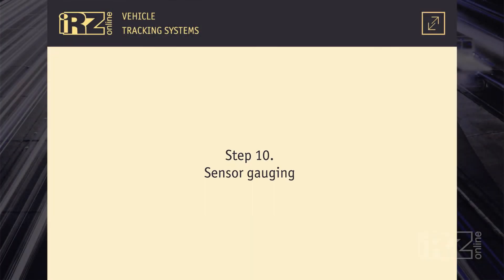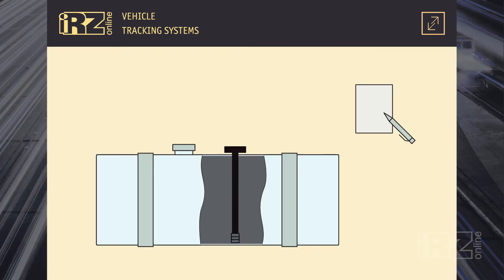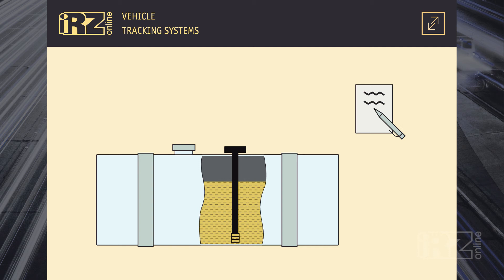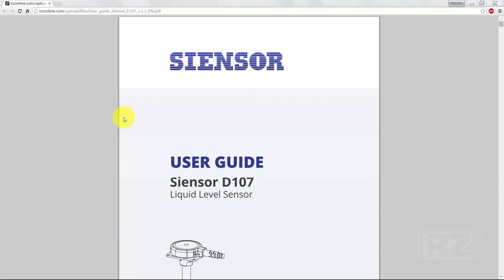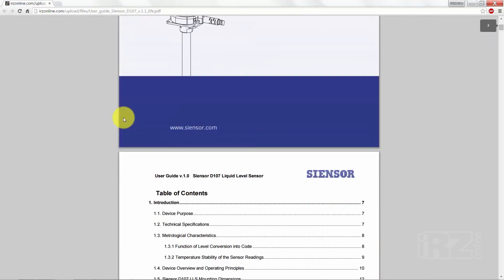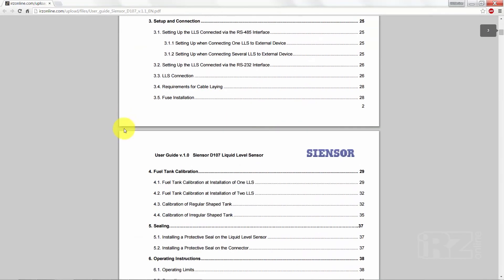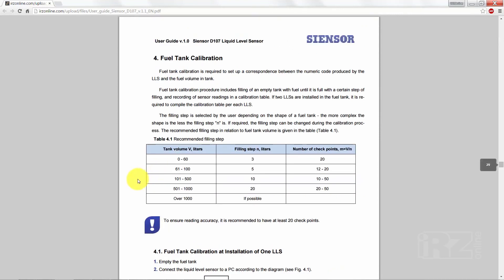The gauging is necessary to improve the accuracy of measuring of the fuel level in the tanks of a regular shape in which it varies disproportionately. Fill fuel in the empty tank portion wise and fix the sensor responses. Thus calibration table is prepared. It is recommended to do at least 20 checkpoints. Select the fueling step by yourself. The more complex shape of the tank demands the smaller fueling step and more control points. Table of recommended fueling steps and the gauging of the tank are described in detail in the user's guide, section calibration of the fuel tank.